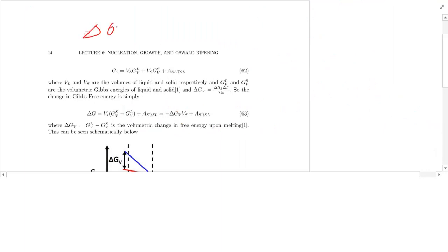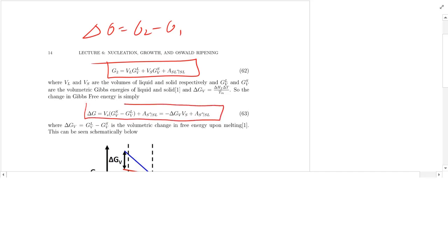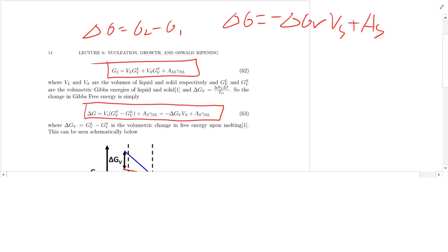Now we can calculate delta G = G2 minus G1. After subtracting and making a couple of key simplifications, we get: delta G equals negative delta GV times the volume of your solid particles, plus the area of the solid-liquid interface times gamma SL.